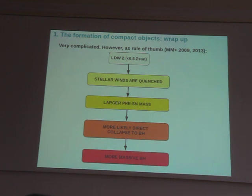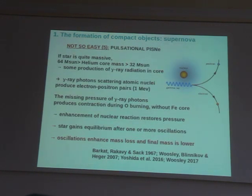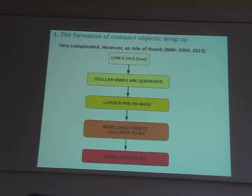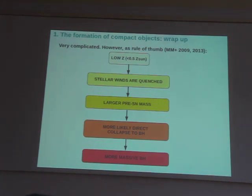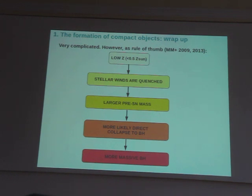After this overview of core collapse supernovae, pulsational pair instability supernovae, and pair instability supernovae — and what happens to our black holes? What is the mass of the black hole? Core collapse supernovae is really a difficult matter and stellar astrophysics is really complicated. The rule of thumb I am about to describe is a simplification — the problem is still pretty complicated with many issues to solve.